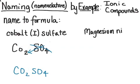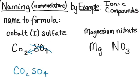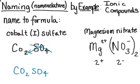Magnesium nitrate is my next example. Magnesium does not have multiple charges, so I know it has a plus two charge. Nitrate has a minus one charge, so I need two nitrates to balance the one magnesium. When writing the formula, erase those charges — we don't write them in the formula. So we've gone from name to formula, and you can also go from formula to name with both types of ionic compounds.